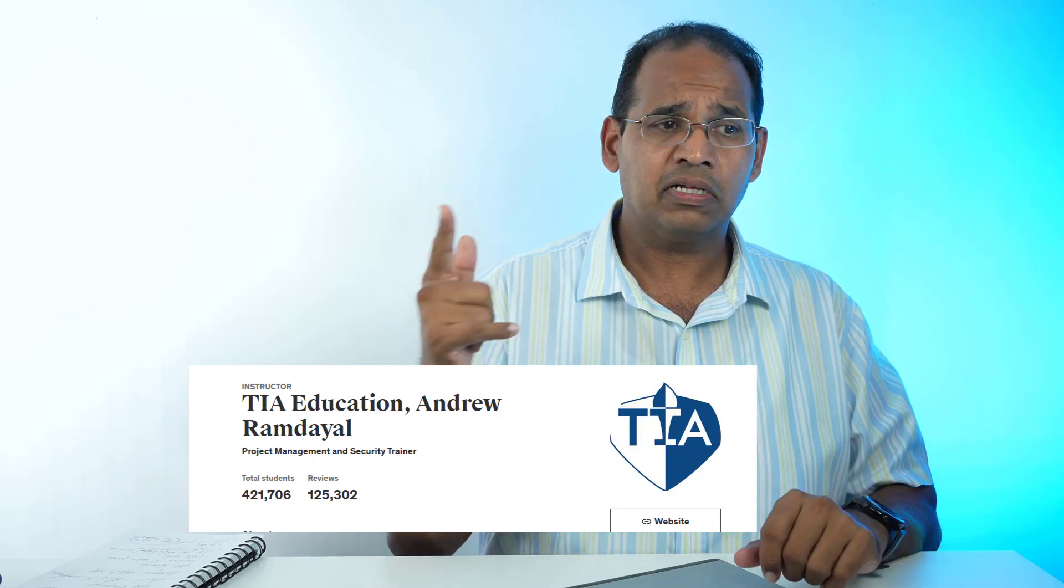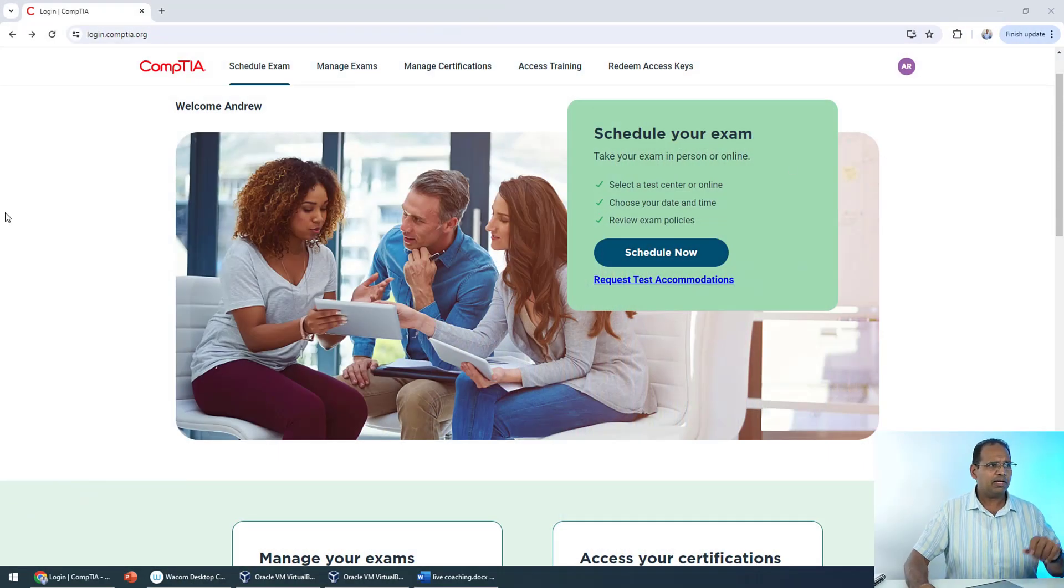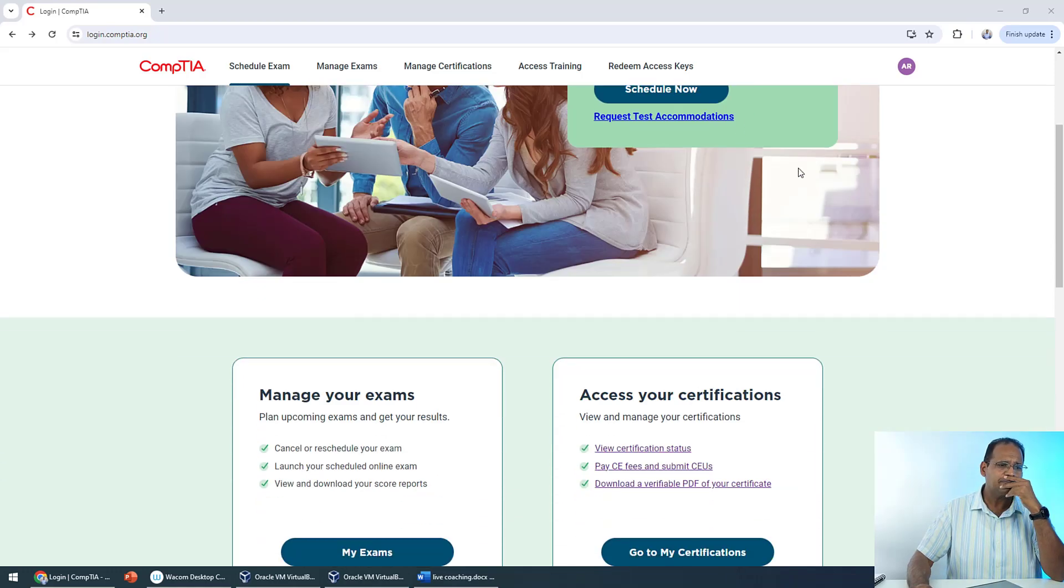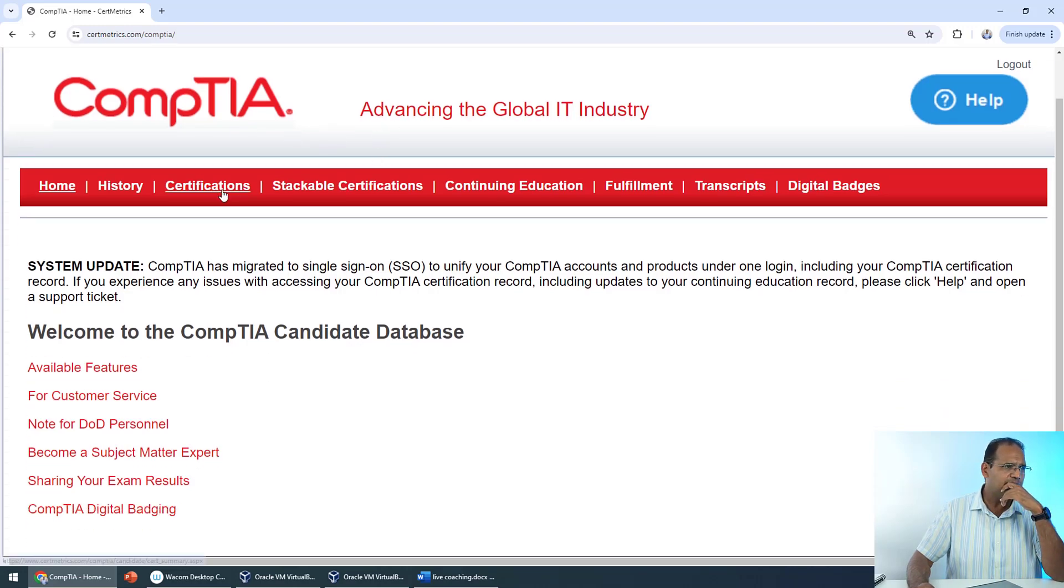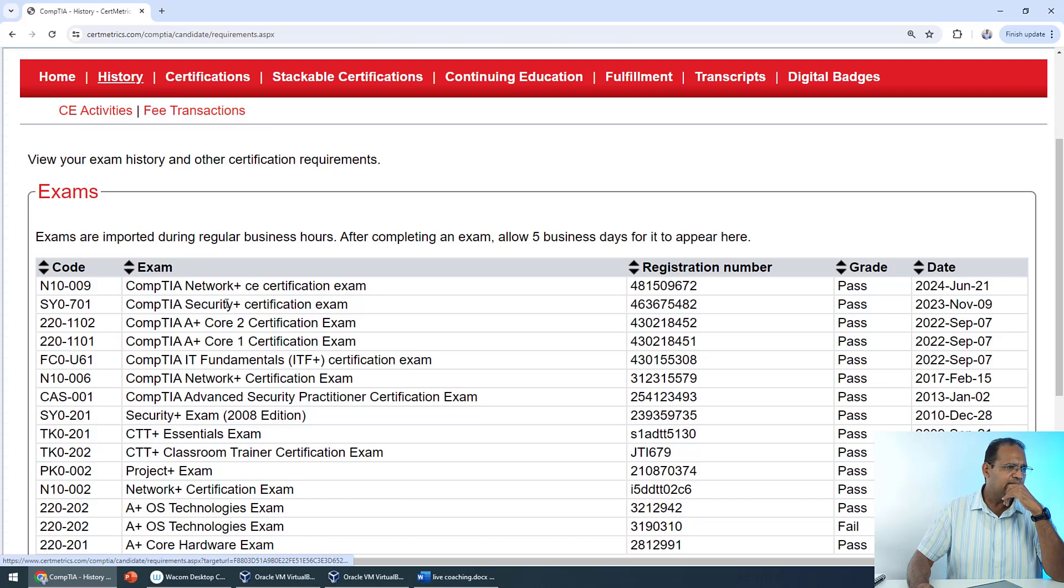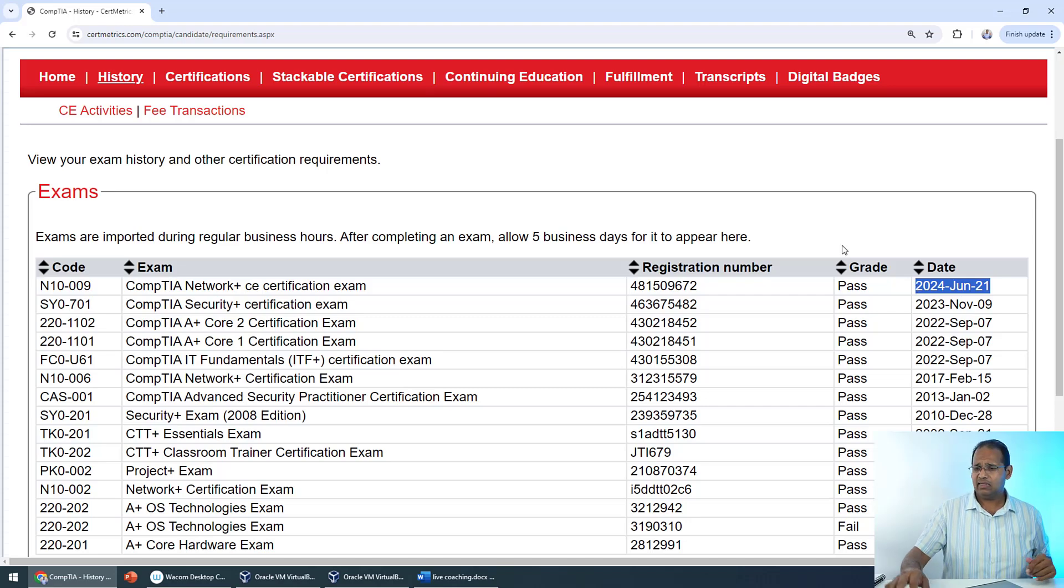Let me show you proof that I actually took the test. This is Pearson VUE where you schedule your exam. Going to my certifications and history, you'll notice N10-009 CompTIA Network Plus, passing grade, taken June 21st, 2024.